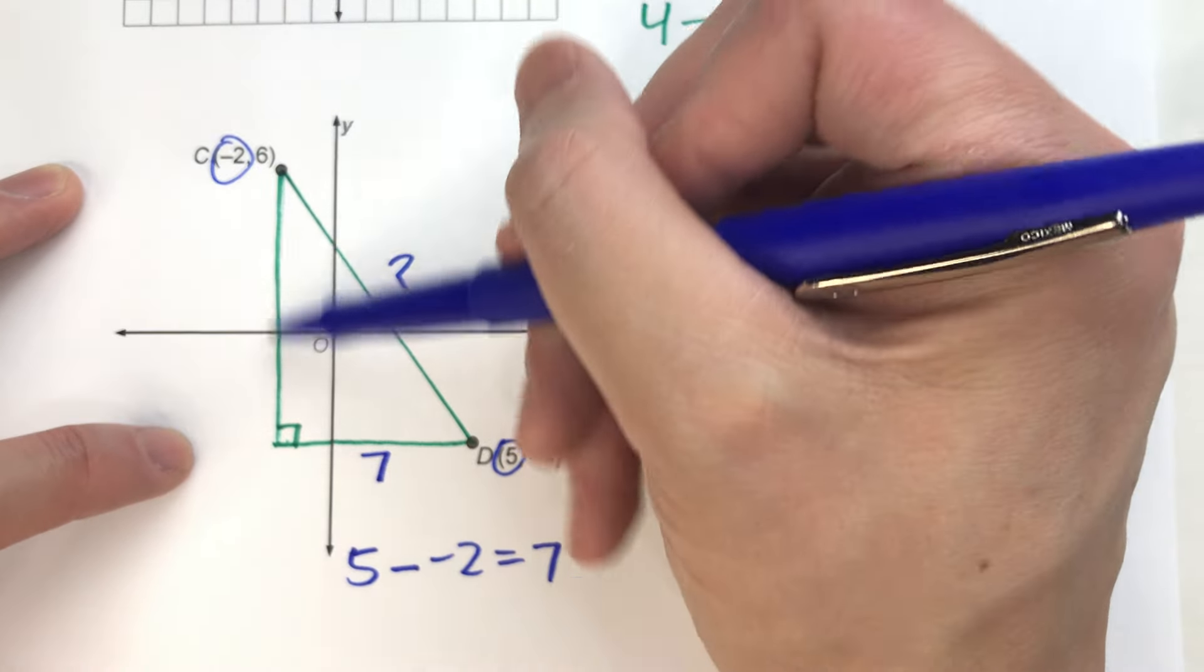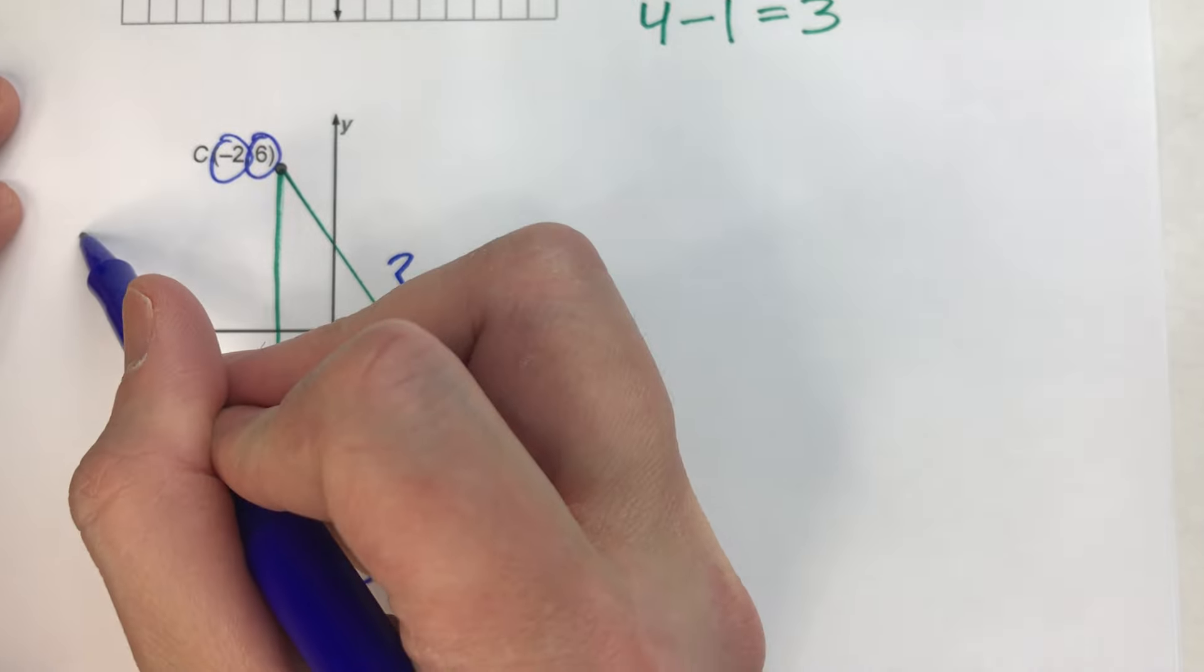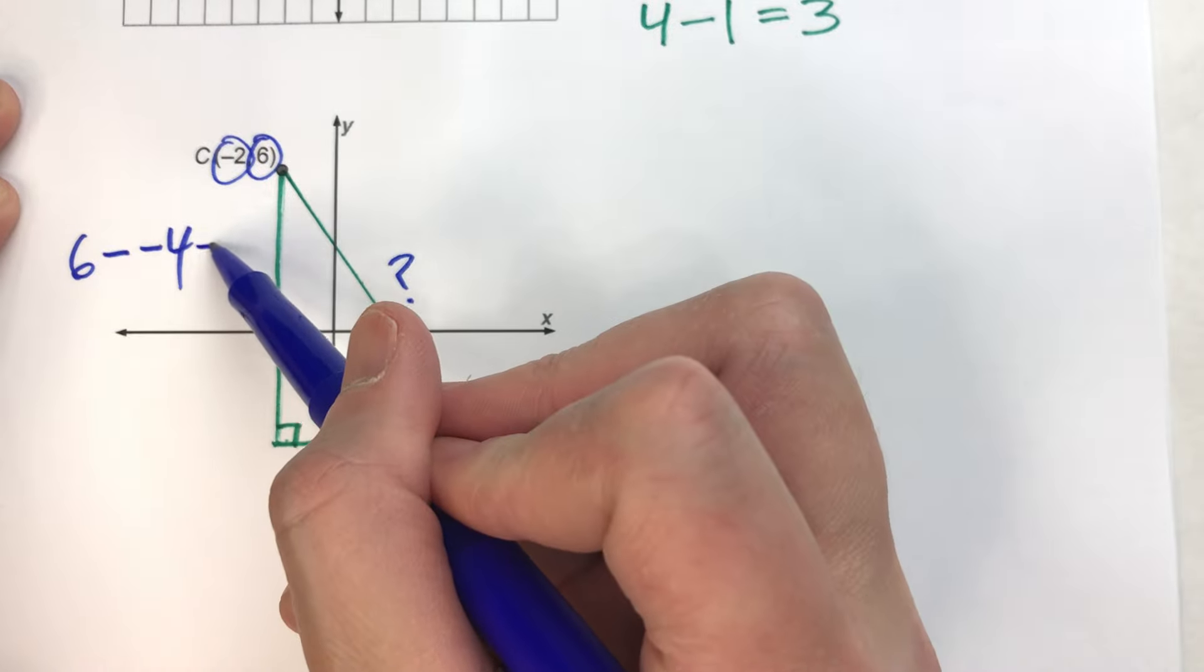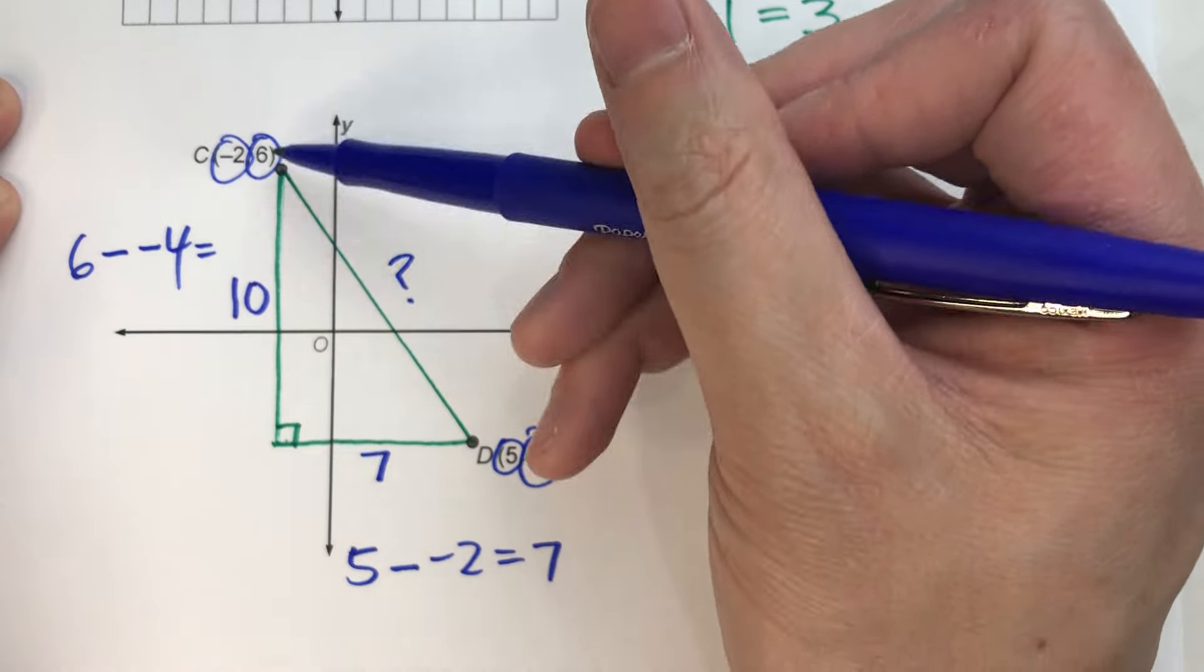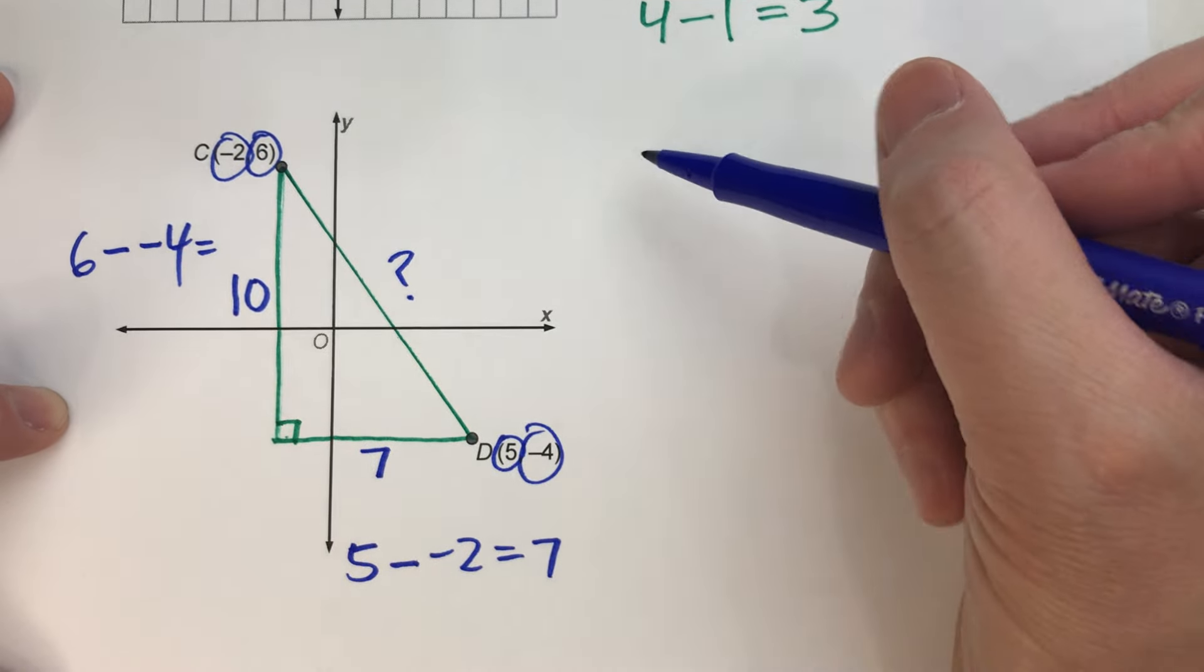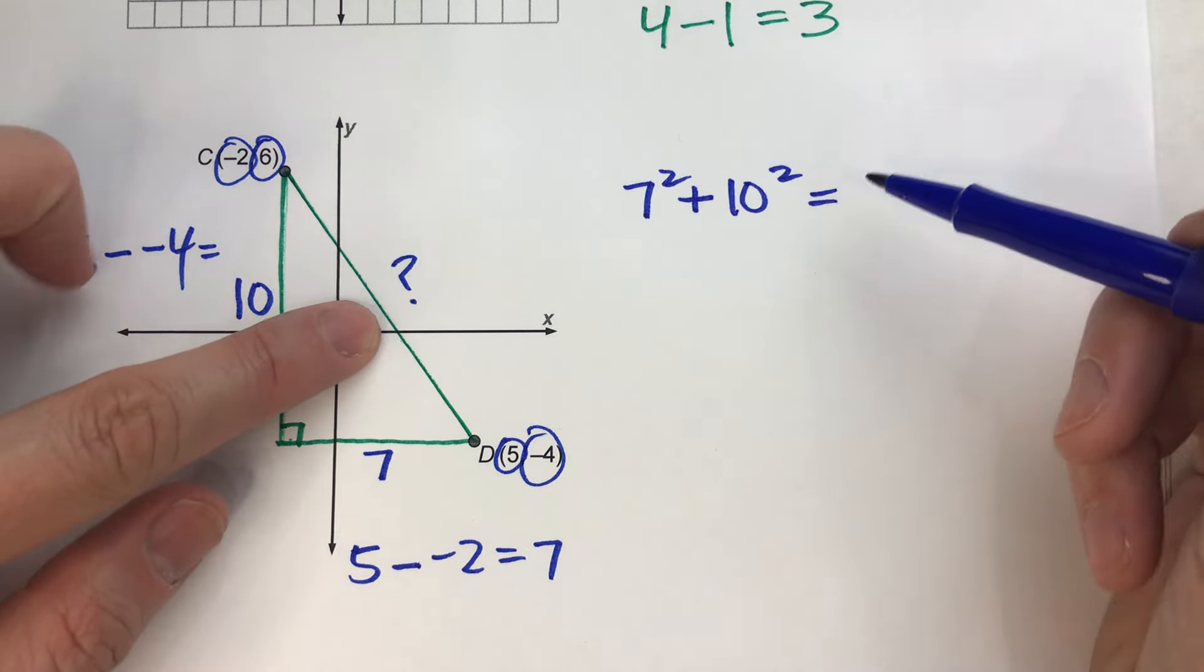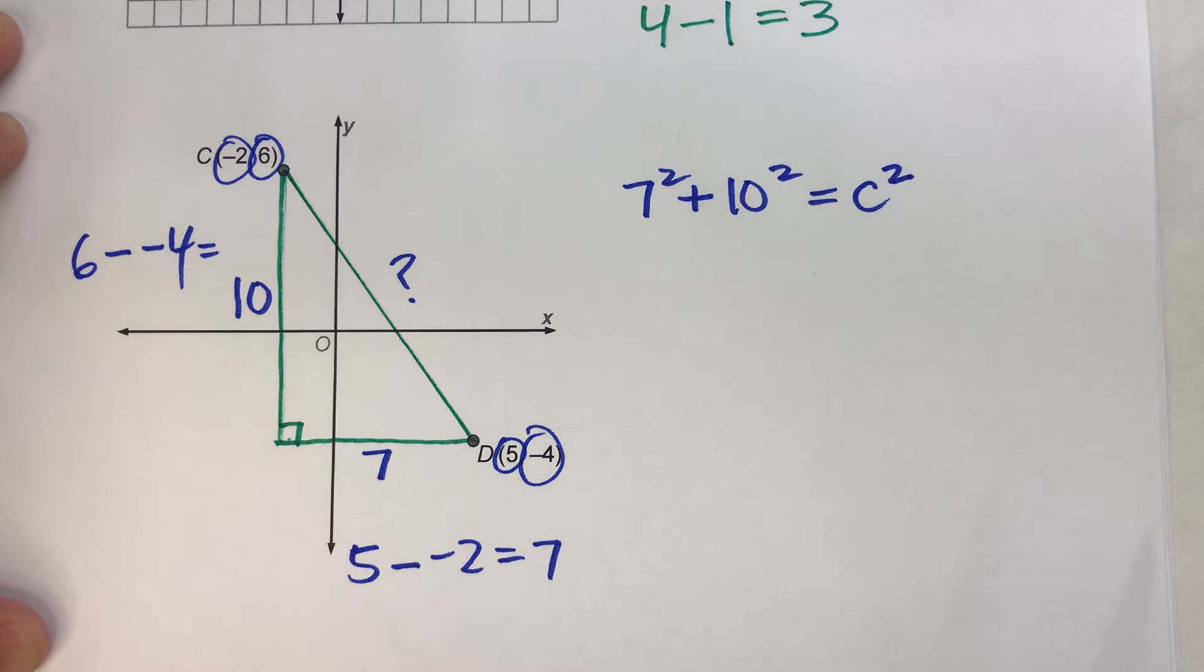Now, let's do the vertical leg. My y-coordinates are 6 and negative 4. So, if I take 6 and subtract negative 4, I'm subtracting the two numbers, that gets me 10. So, the vertical leg is 10. And now, I can set up the Pythagorean theorem to find the missing side. 7 squared plus 10 squared equals the hypotenuse squared, C squared. And that's the distance between the two points.